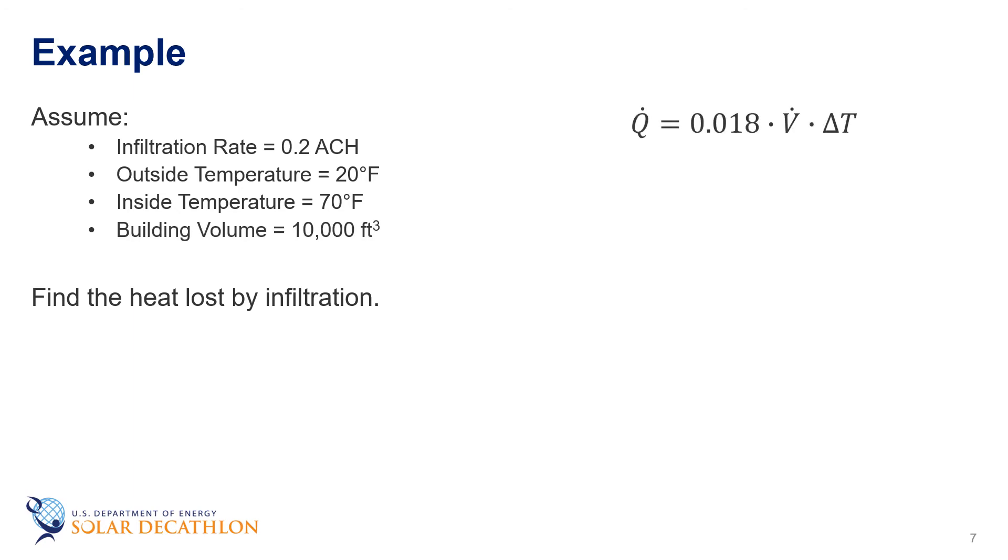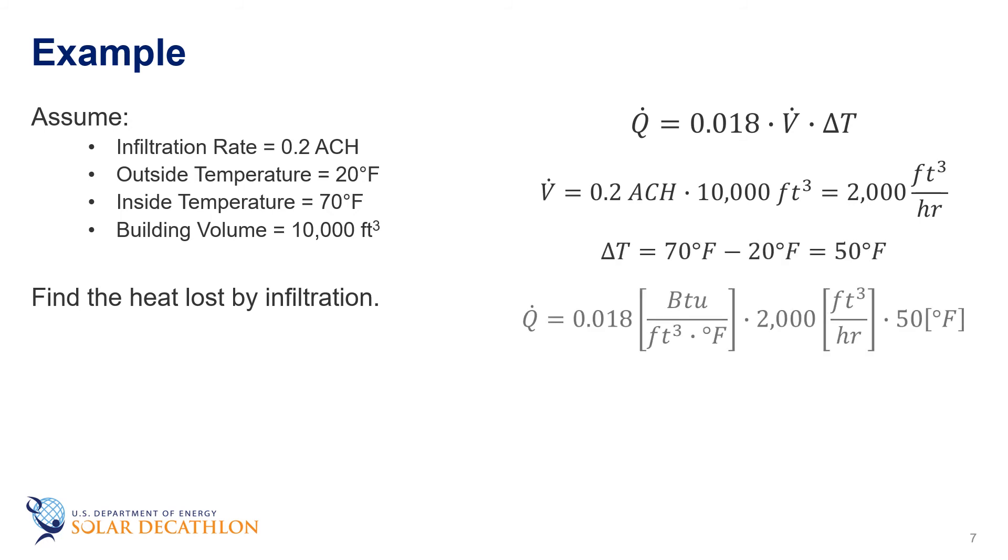For 0.2 air changes per hour, multiply this by the 10,000 cubic feet per air change, and we get 2,000 cubic feet per hour. This represents 1,800 BTUs per hour required for heating.